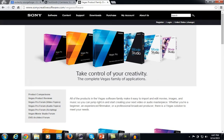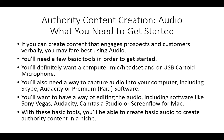These programs can be a little pricey, but you can often find them on places like Amazon or eBay where they'll be a lot less expensive. Once you have these basic tools, you will be able to create basic audio to create authority content in a niche. If you already have your content source — whether that's your knowledge, your experience, or private label rights content — all you'll need to do is start recording your audio and make sure it's edited for whatever medium you want to put it in. Then you will be ready to get started creating authority content using the audio medium.